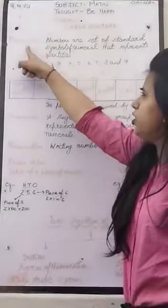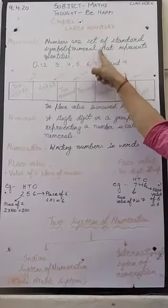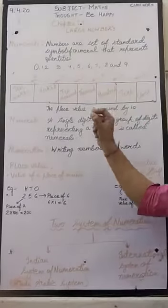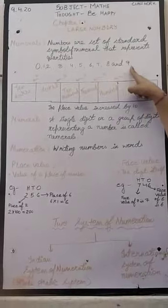Large numbers. What are numerals? Numbers are set of standard symbols of numerals that represent quantity. That means every digit is a number like 0, 1, 2, 3, 4, 5, 6, 7, 8 and 9.